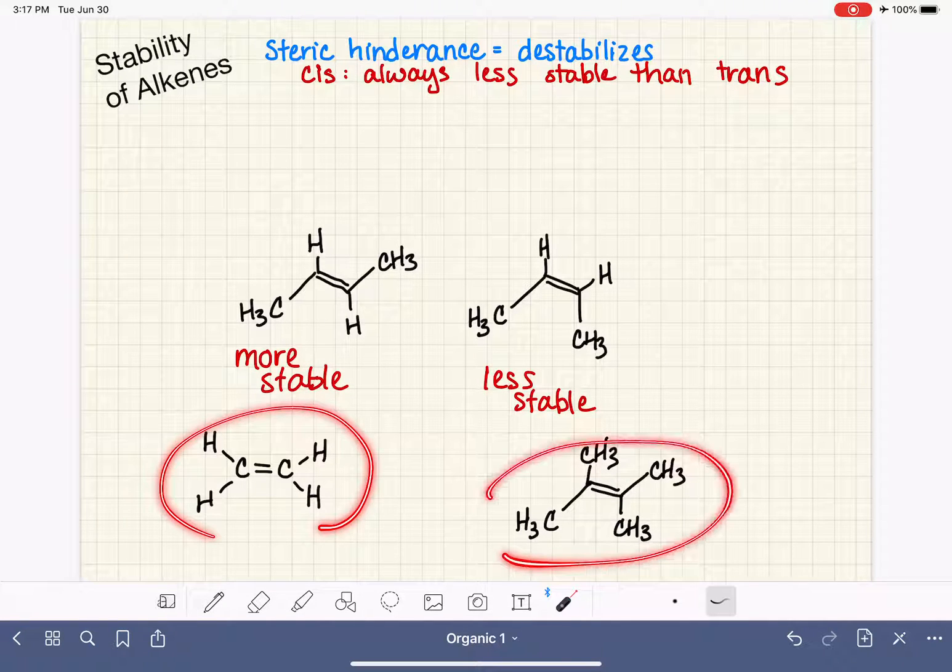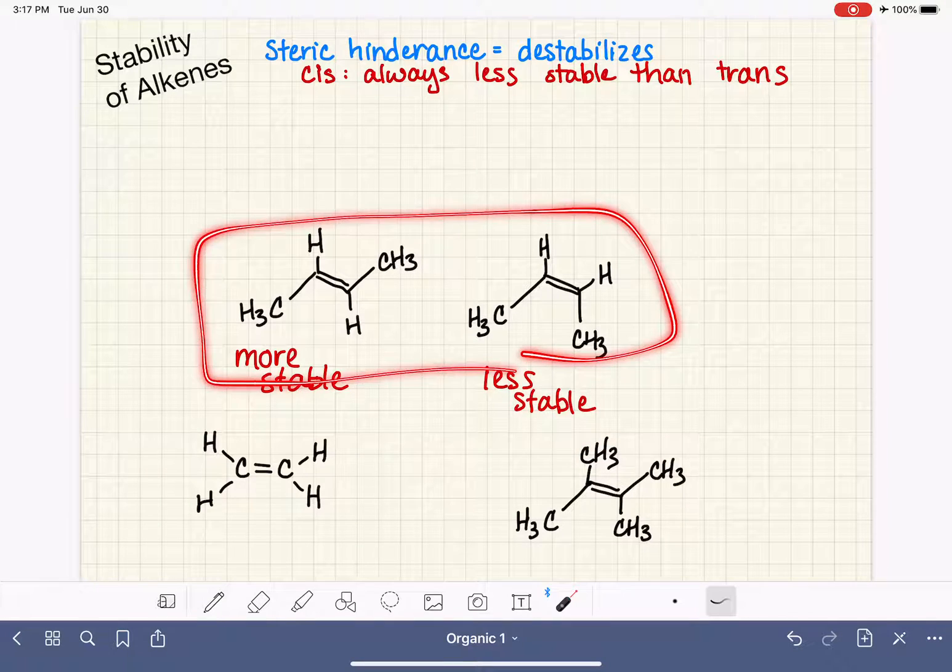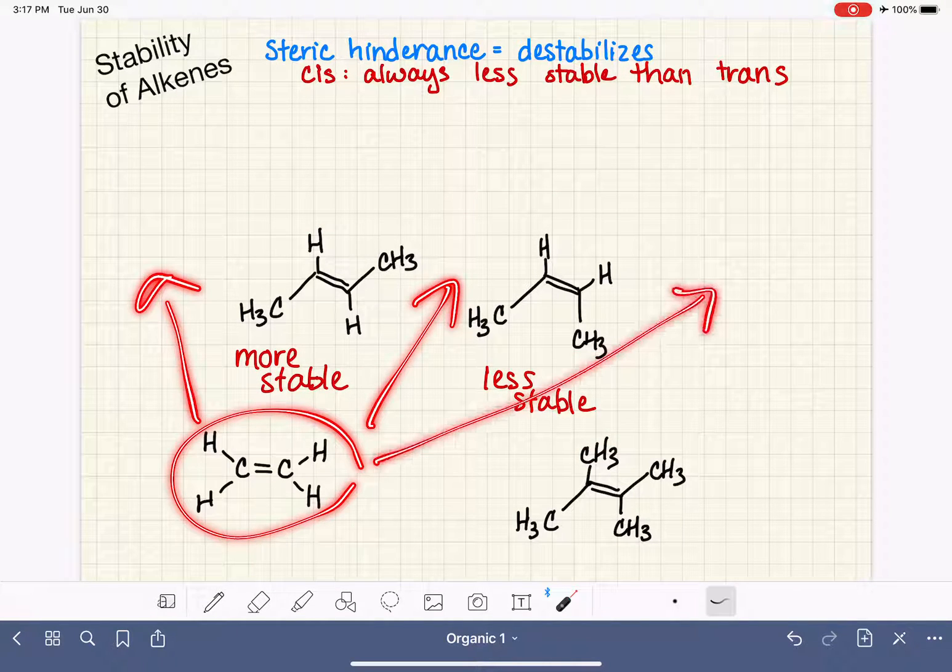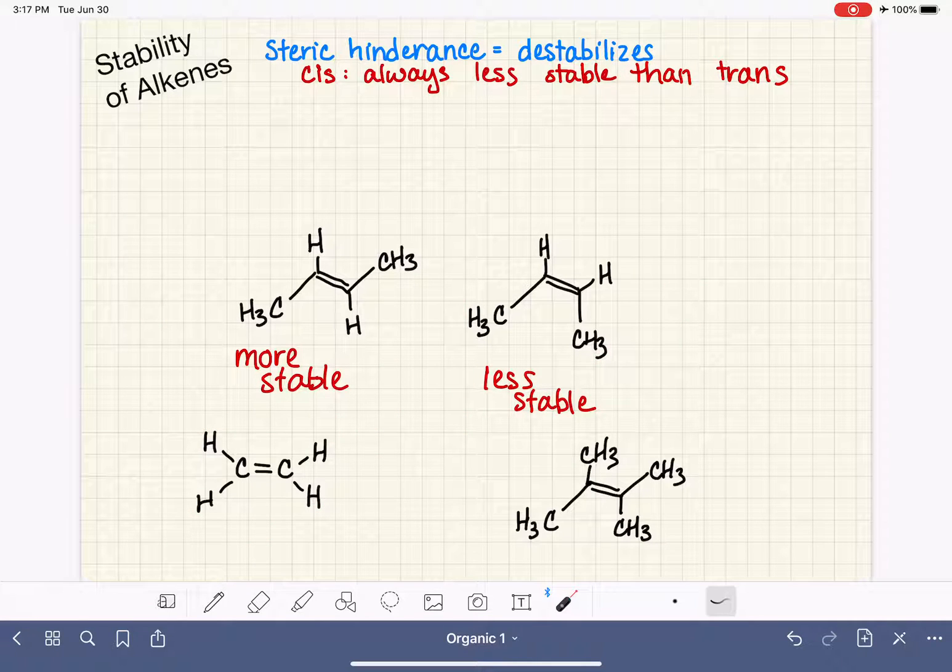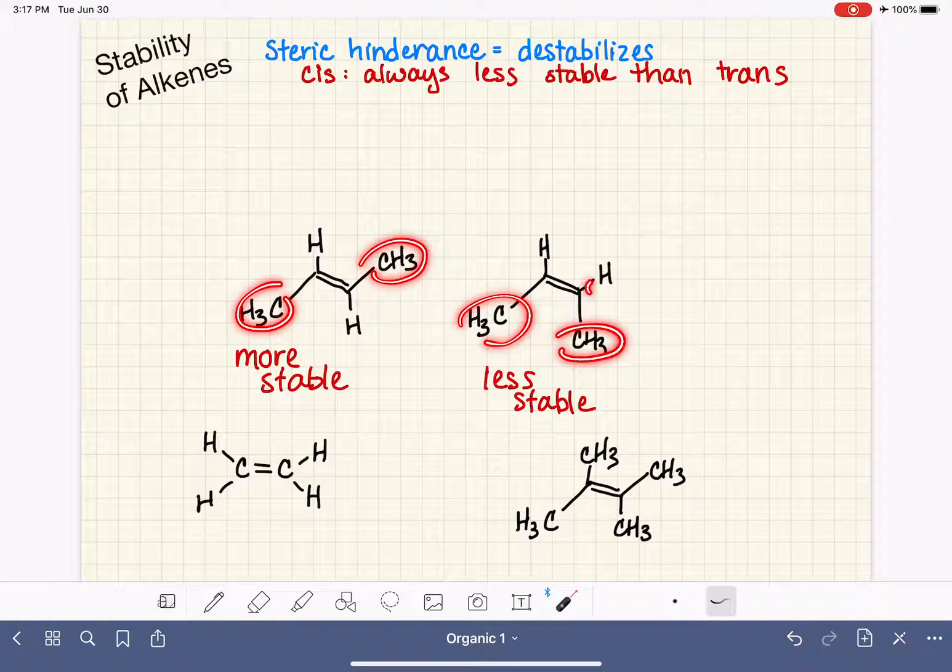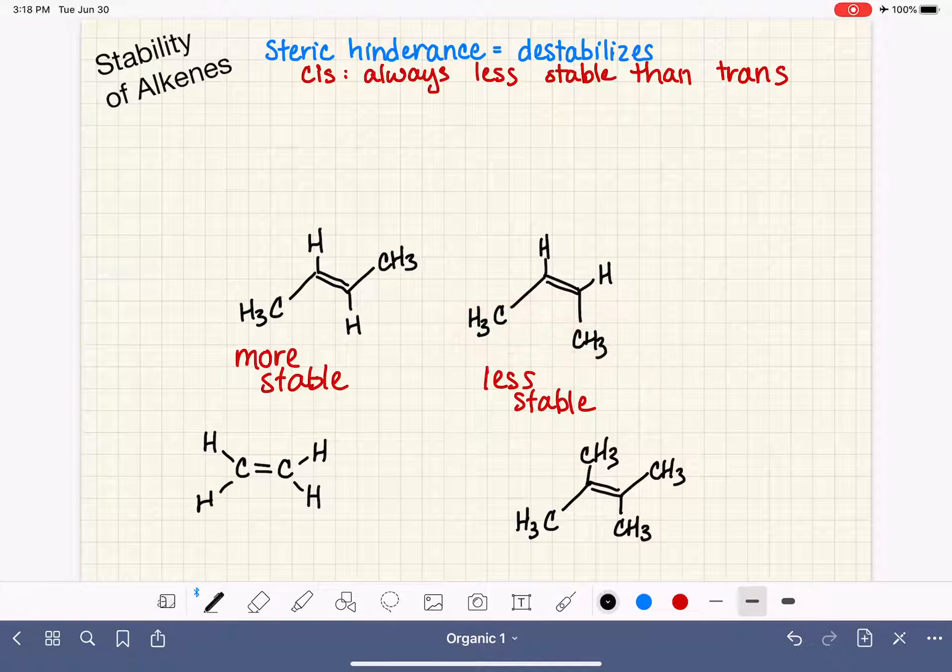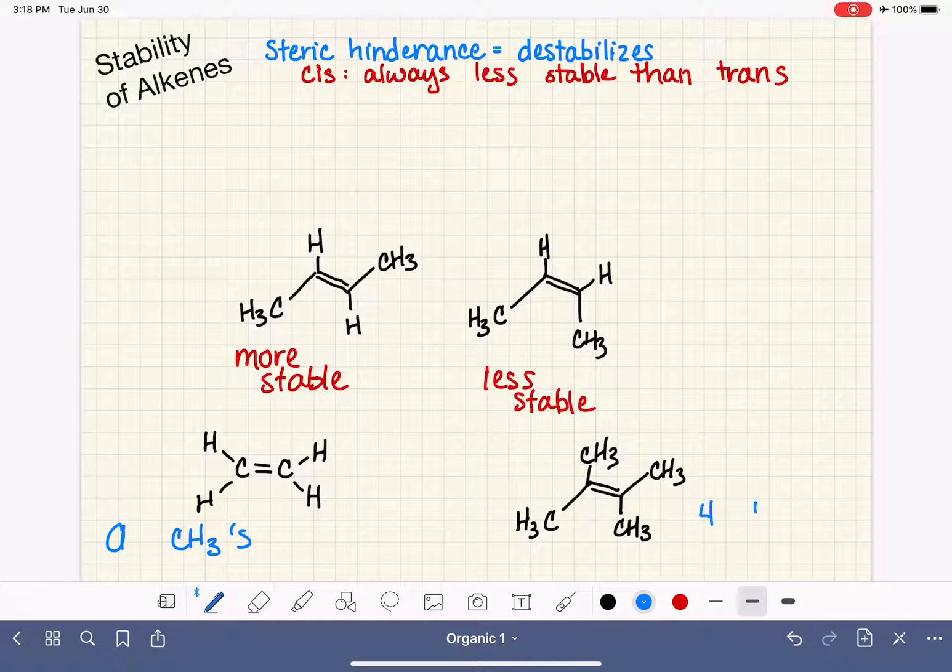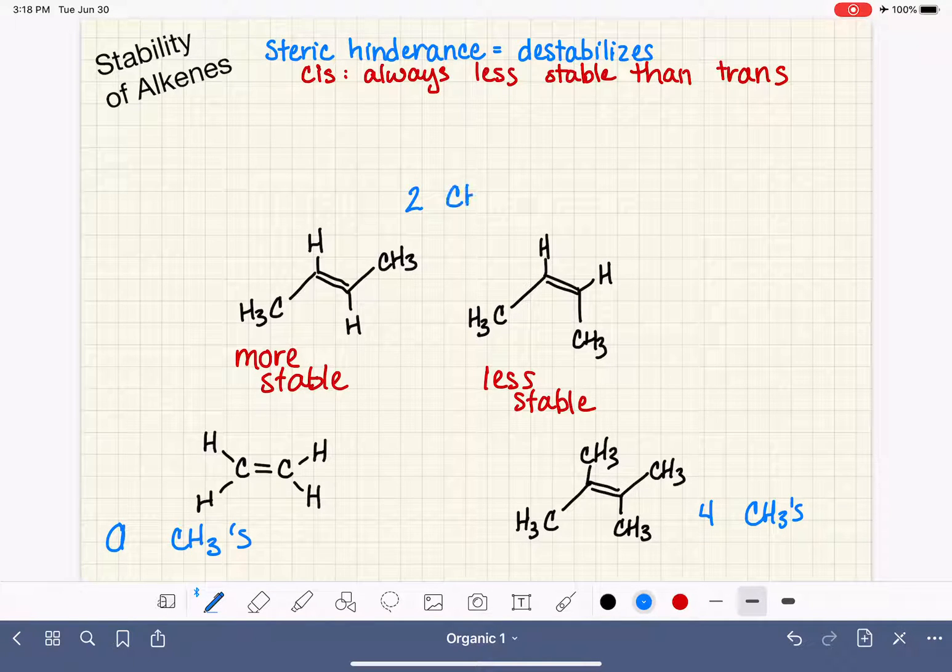Comparing these molecules to the first two, because that's what we want to do, we want to be able to rank these guys along with the first two that we looked at. Both of these have two methyl groups on them. So what we're looking at, just in terms of differences, we have zero methyl groups versus four methyl groups versus two methyl groups.